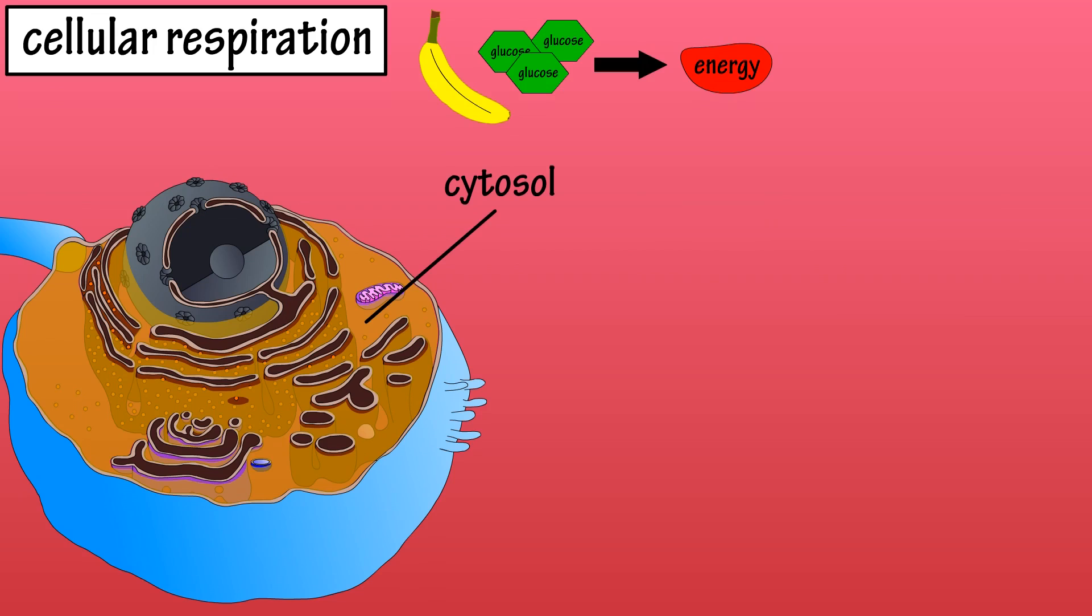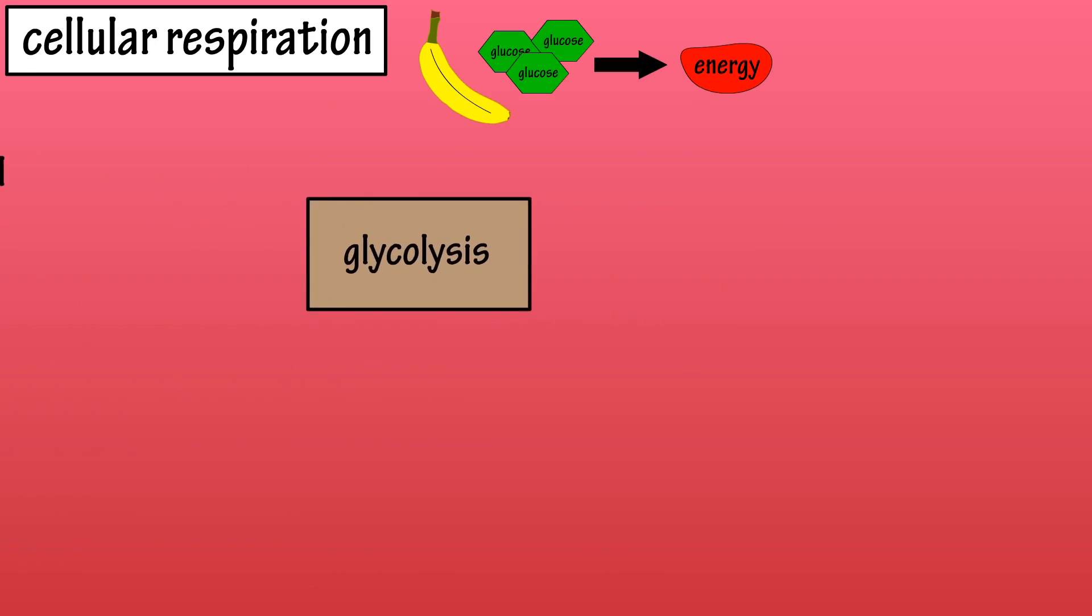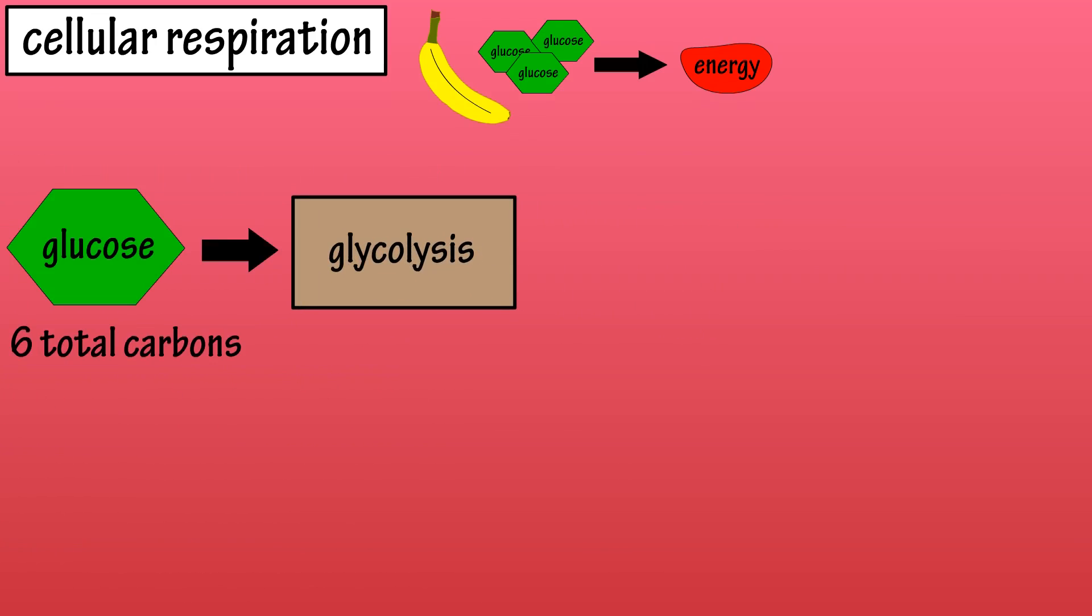Inside the cytosol of a cell is where the first step, glycolysis, takes place. During glycolysis, a molecule of glucose which has six carbons goes through a series of steps which lead to the glucose molecule being converted to two pyruvate molecules. These pyruvate molecules have three carbons each, so six carbon glucose to two three carbon pyruvates.